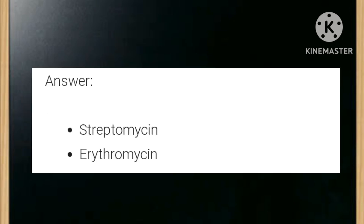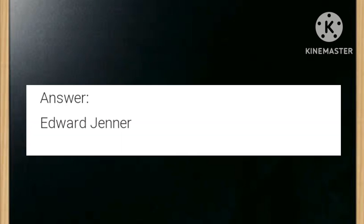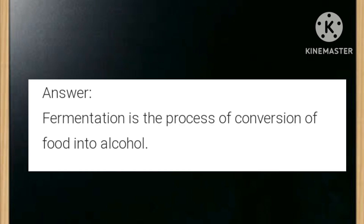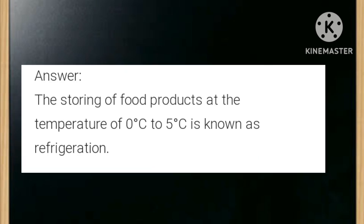Streptomycin and erythromycin. Who discovered the vaccine for chickenpox? Edward Jenner. What is fermentation? It is a process of conversion of food into alcohol. Define refrigeration: the storing of food products at a temperature of 0 to 5 degrees centigrade is known as refrigeration.